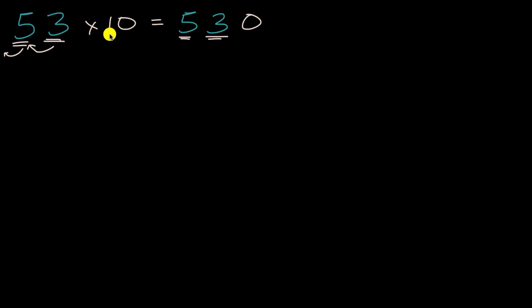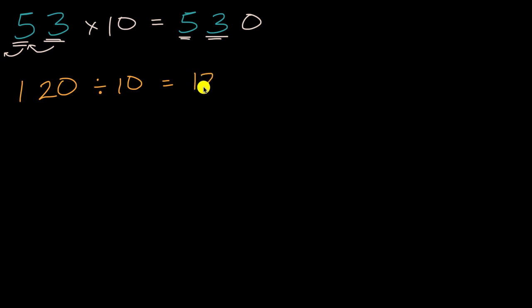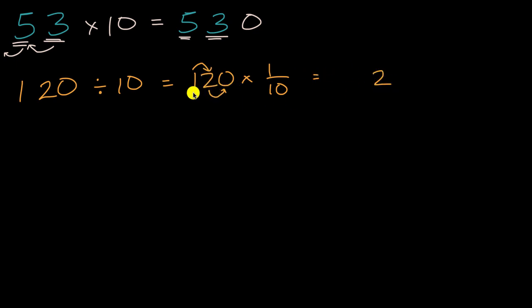And we saw that if we divide by 10, you have the opposite effect. So let's say if I had 120 and I divide by 10 — I could also say this is the same thing as 120 times one tenth — all the digits are going to shift one place to the right. What used to be in the tens place will now be in the ones place, and what used to be in the hundreds place will now be in the tens place. So this is just going to be equal to 12.